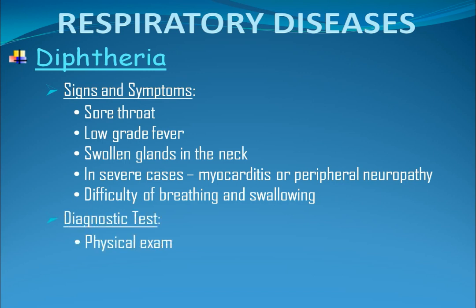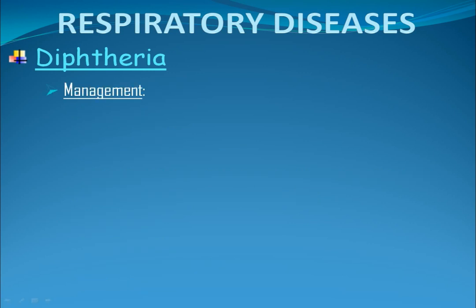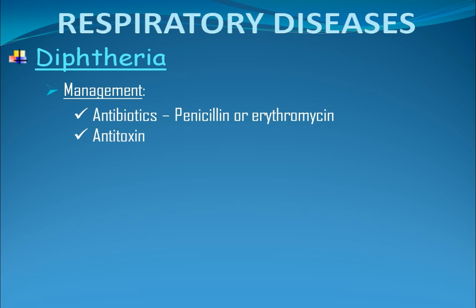Diagnostic test: Physical exam is done to check the swollen lymph nodes, and will show a grayish exudate that coats the throat or tonsils. To confirm the diagnosis, a nose and throat swab or throat culture is done and will show presence of Corynebacterium diphtheriae. Management: Antibiotics such as penicillin or erythromycin is prescribed. Antitoxin is given to counteract the diphtheria toxin in the body; before giving, perform a skin allergy test first.